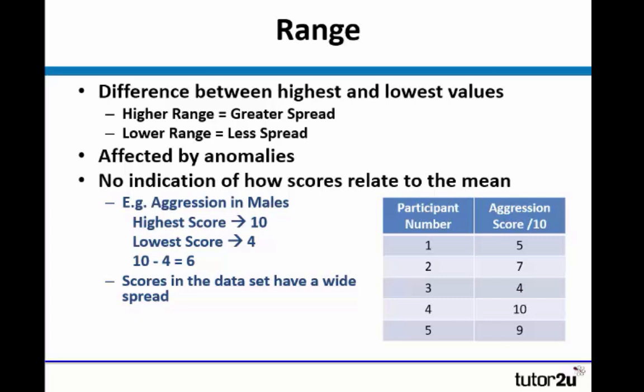The range is very much affected by anomalies because it is such a simple calculation, the highest score minus the lowest score. And there is no indication of how the scores relate to the mean.